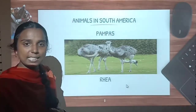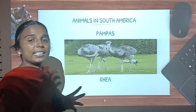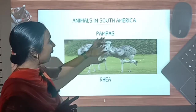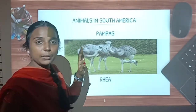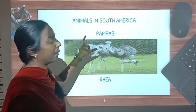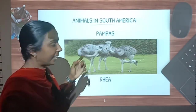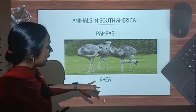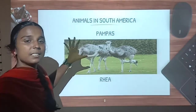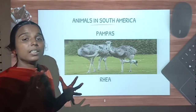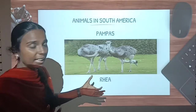Now let us see the animals in South America. The grasslands in South America are known as pampas. What are the important animals we can see in the pampas? First, see rhea — this is a bird. This is the largest bird in South America. Which is the largest bird in South America? Rhea.